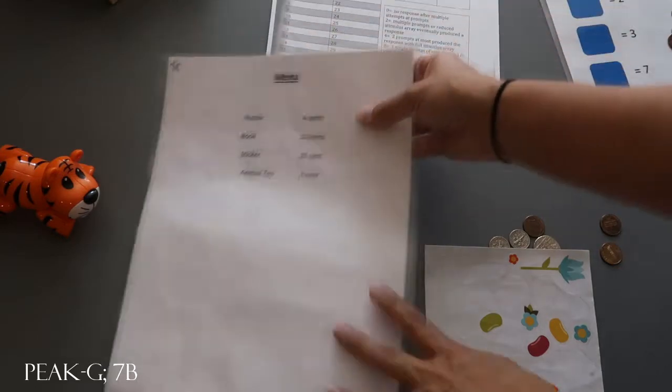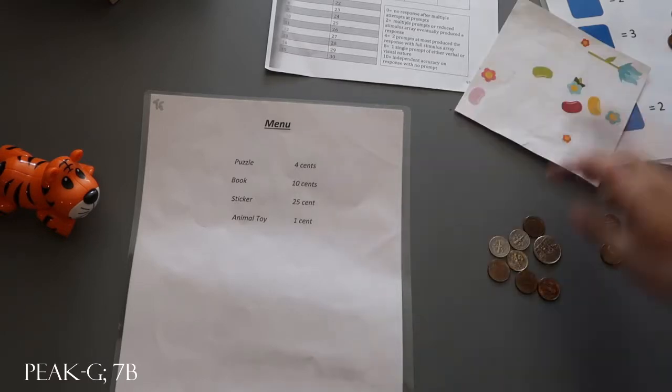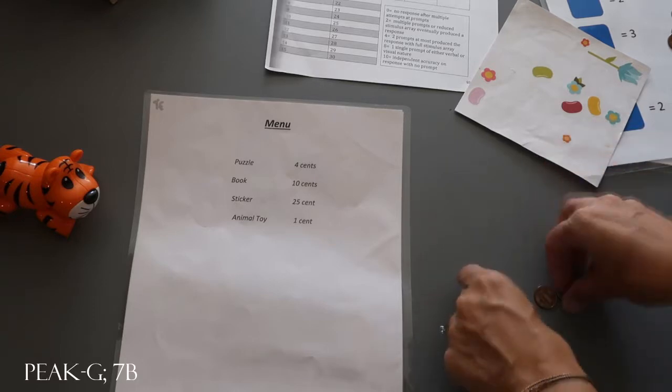But if you're on the test side and it's 1 cent and they give you 4 cents, it's incorrect. They would get a zero and you would just move on to the next one. So that's just kind of one example.